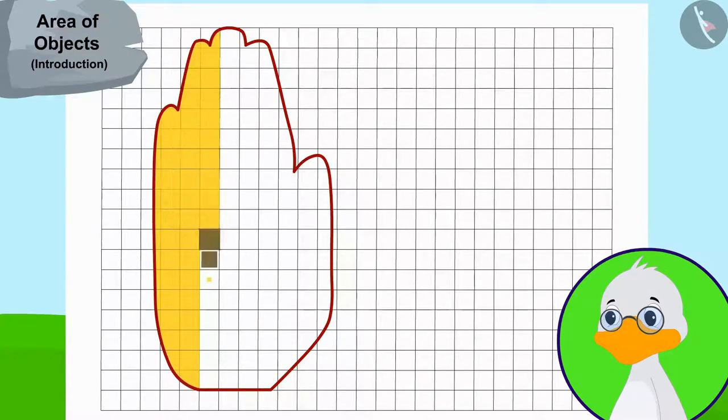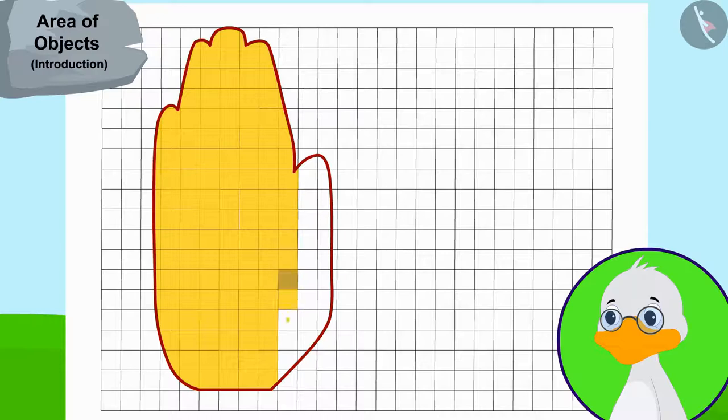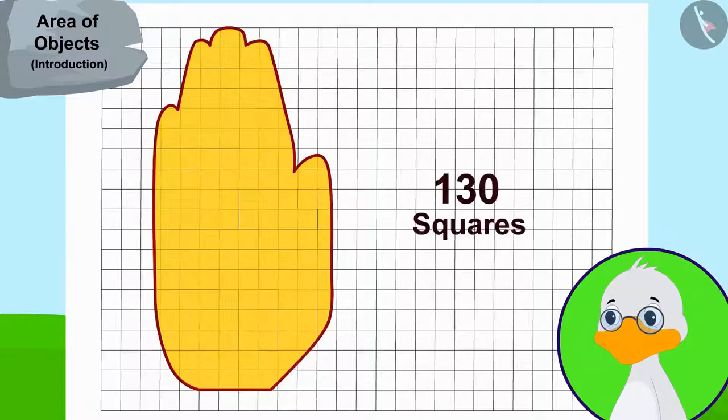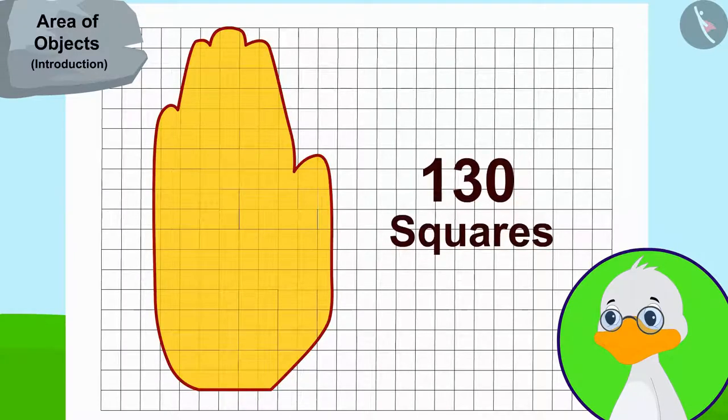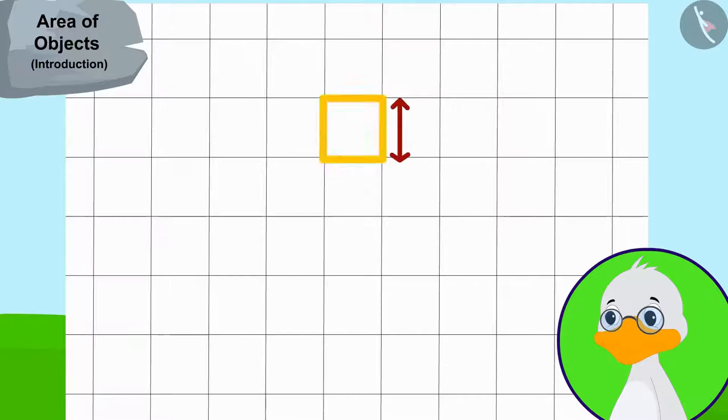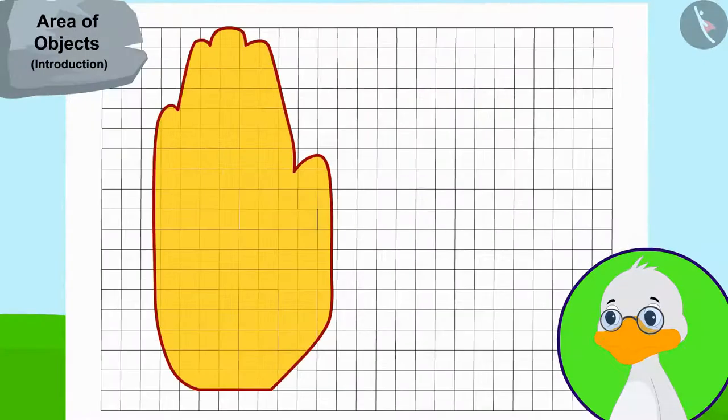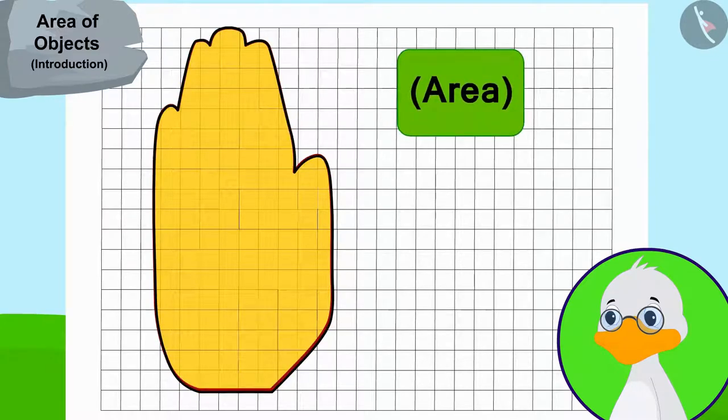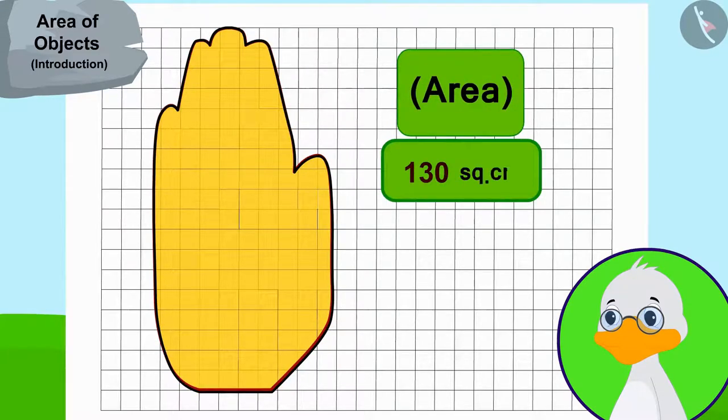It took a long time for uncle to do this process. And finally, he came to know that the hand impression is covering 130 squares. The side of each square is one centimeter long. Therefore, the area of this hand impression is 130 square centimeters.